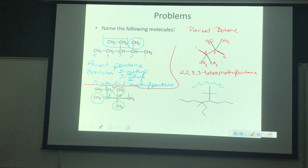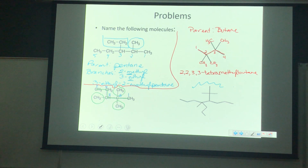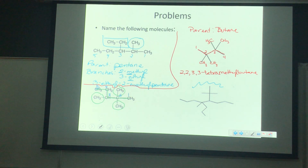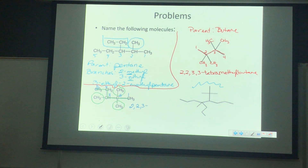Instead of listing them all out, let's recognize: because I have four methyls, that's going to be called tetramethyl. If you have two, it's dimethyl; three, trimethyl; four, tetramethyl. You need to tell your reader the location of all of those branches, even if they're the same and even if they're on the same carbon. If you've got four branches, you need to have four numbers.